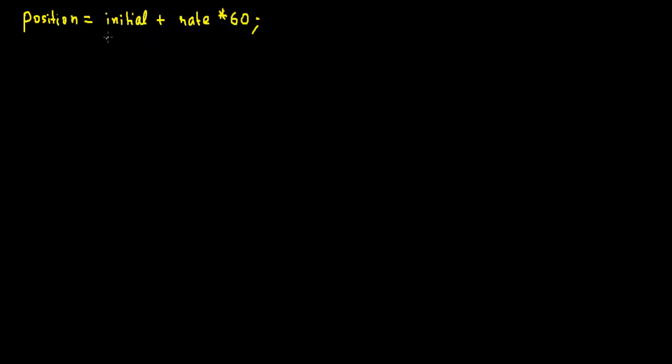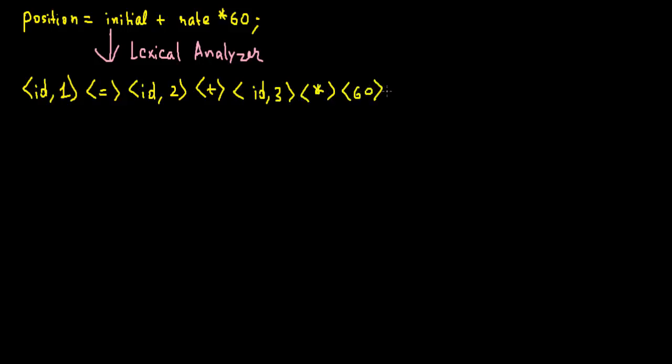First it will go to the lexical analyzer. What will happen here is the lexical analyzer will break into tokens. It will convert into ID for this position, equals to operator, now ID 2, now this one equals to plus, now for ID 3, this will be multiply, now 60, and finally this semicolon.